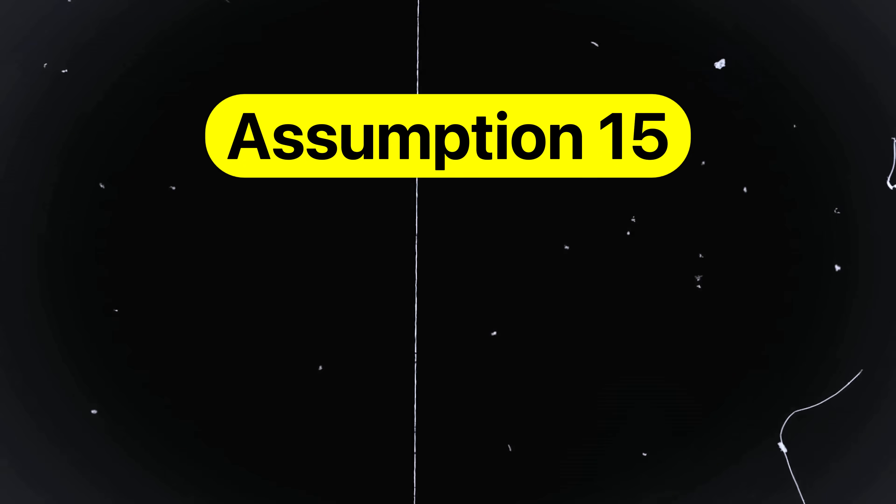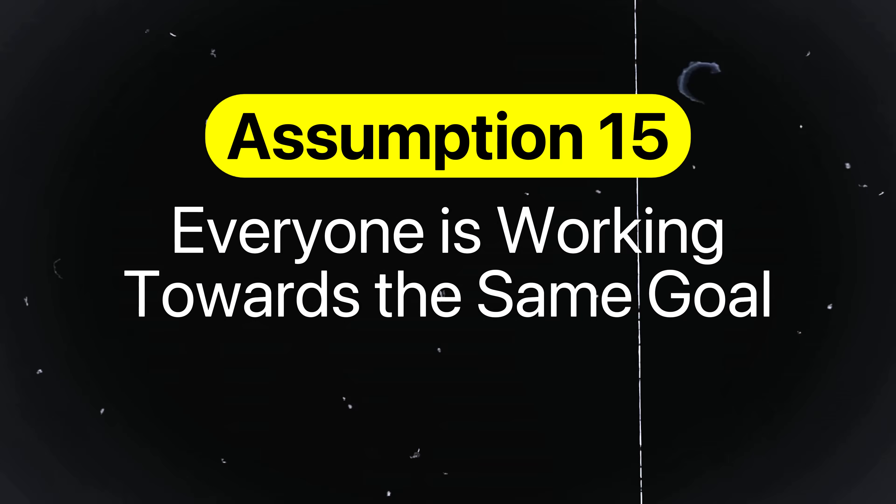The last few assumptions are less technical, but just as important. Assumption number fifteen is everyone is working toward the same goal. This might be true on paper, but in reality, different teams often have different priorities. Mechanical engineers tend to focus on overall performance and functionality — making sure parts work under load, meet specifications, and fit the overall system. Manufacturing engineers care about how quickly and cheaply parts can be made and assembled. Marketing, on the other hand, is thinking about return on investment, voice of customer, and hitting product launch deadlines. If these priorities aren't aligned early, it leads to friction, missed deadlines, and compromises that show up way too late in the process.